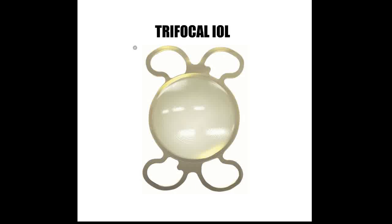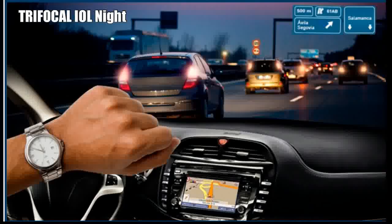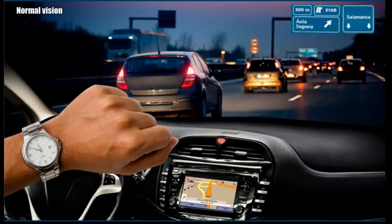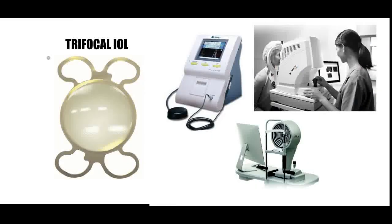Now coming to the most expensive of all intraocular lenses, the trifocal lenses. The trifocal lenses provide vision comparable to young eyes during the day, where all near, intermediate, and distance vision is provided by the lens. In the night, near and intermediate vision is very good. Distance vision is also good, but just like in multifocal IOLs, the lights may appear a little brighter than they actually are. But this is the closest we have got to what our natural lenses give us. Over time, our brain adapts to these lights and vision improves.